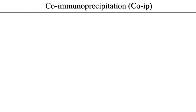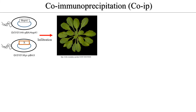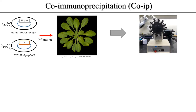You should transform your vectors to agrobacterium. These vectors should contain each protein whose interaction you want to know. After this, you should infiltrate agrobacterium into the plant. Subsequently, the leaves of the plant are ground using an IP buffer. The resultant is placed in an E-tube containing beads, and incubation is performed for a specific time.